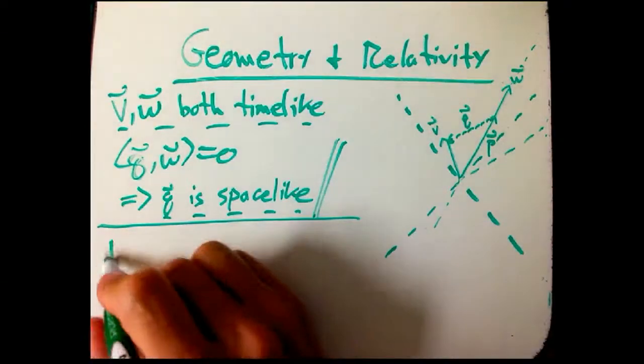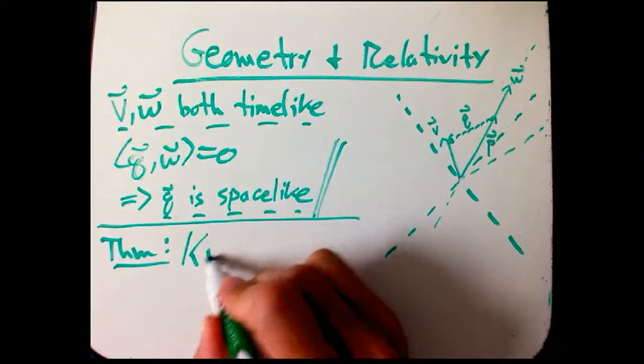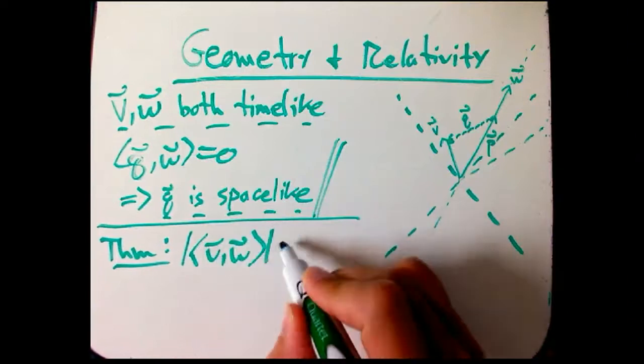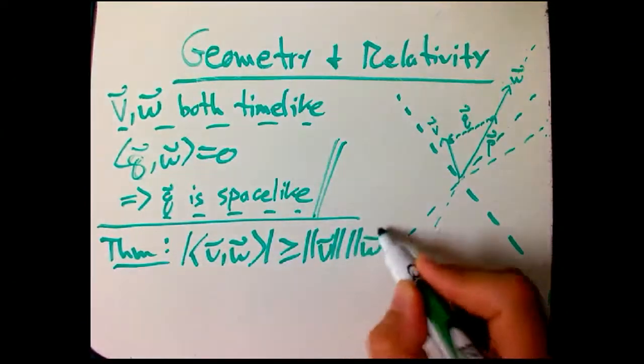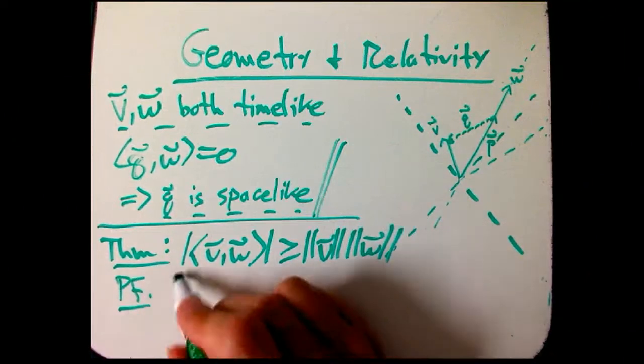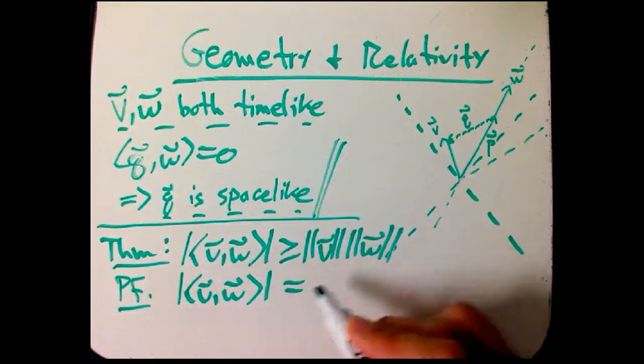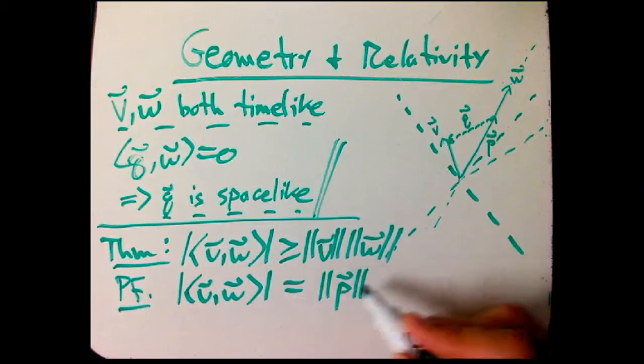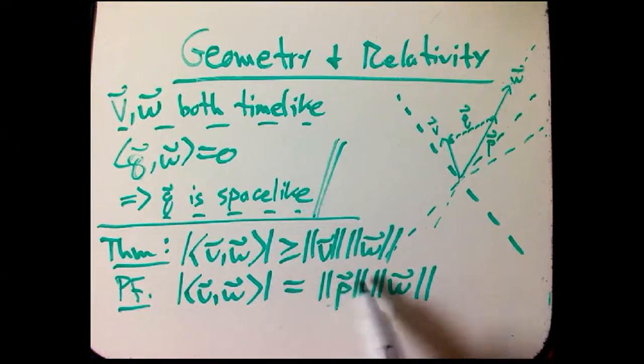Okay, so let's look. The theorem is that, given this assumption, it's a reverse version of Cauchy-Schwartz. This is actually greater than or equal to the product of the magnitudes. Okay. Let's start on the proof. What do we know already? Just from projections, this had nothing to do with Minkowski versus Euclidean. This was one of the interpretations of what is the magnitude of the scalar product. It's the magnitude of the projected vector times the magnitude of W.